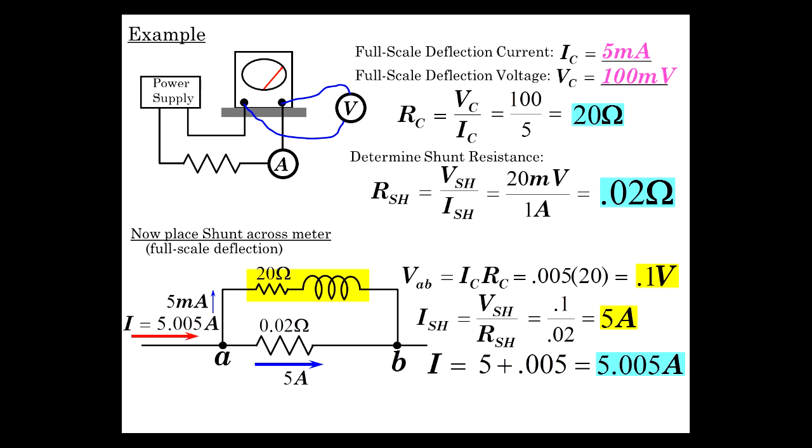But the current is just a little bit more. It's 5.005 amps, right? Because you have to have the 5 milliamps. That may or may not be significant. We may not care about that at all. But that will then be the full scale reading. If you have a full scale reading, it means you have 5 amps flowing through that circuit. Or even more specifically, 5 plus 5 milliamps.